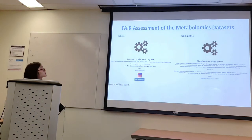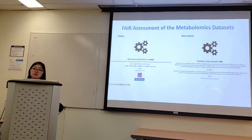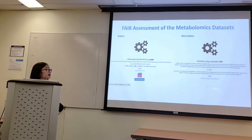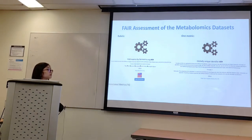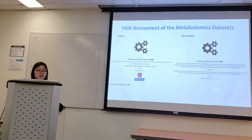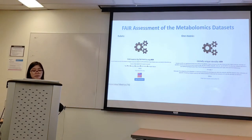The specific rubric used has 16 associated metrics. One of the metrics asks if the digital object has a globally unique identifier, and this metric is assessing findability. Similarly, other metrics in the rubric assess this and other aspects of FAIR.